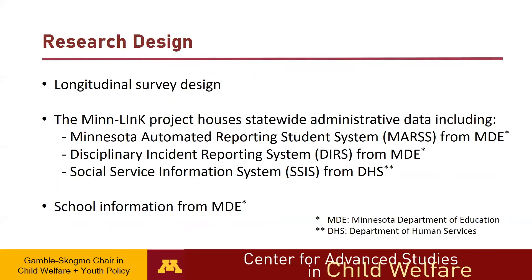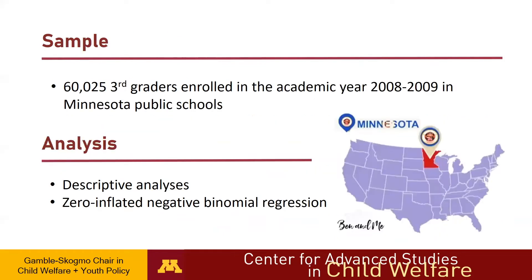In order to investigate risk factors of OSS, the study used a longitudinal survey design. We also used a secondary dataset from the Minnesota Linking Information for Kids project. This project has statewide administrative data, including the Minnesota Automated Reporting Student System and the Disciplinary Incident Reporting System from the Department of Education, the Social Service Information System from the Department of Human Services, and school information from the Department of Education. The sample was 60,025 third-graders enrolled in Minnesota Public Schools in the academic year of 2008 to 2009. Descriptive analyses were used to describe the socioeconomic characteristics of the sample, and for the main analysis, we conducted zero-inflated negative binomial regression to investigate factors that affect OSS experience and examine the moderating effect of ethnicities or indigeneity on the relationship between child maltreatment allegations and OSS experiences.